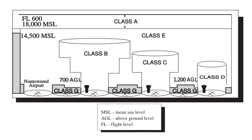Class D airspace is delimited by a thin, dashed blue line, generally in the form of a circle centred on an airport. A number enclosed in a box surrounded by a similar dashed line gives the upper limit of the airspace in hundreds of feet; the lower limit of Class D is always the surface. A minus ceiling value indicates surface up to but not including that value.